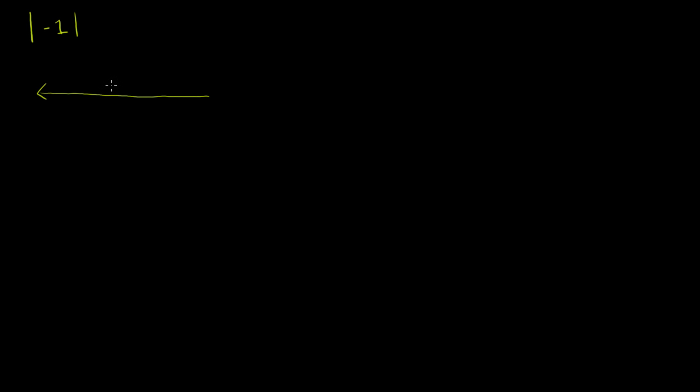Let's do some equations that deal with absolute values. As a bit of a review, when you take the absolute value of a number — let's say the absolute value of negative 1 — what you're really doing is asking how far is that number from 0. If we draw a number line, negative 1 is 1 away from 0, so the absolute value of negative 1 is 1. And the absolute value of 1 is also 1 away from 0, so it's also equal to 1.